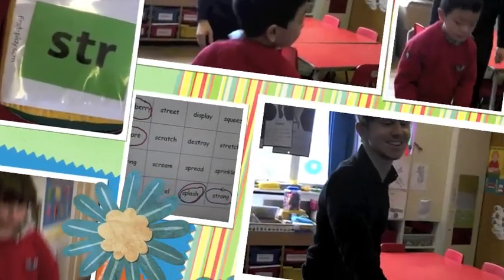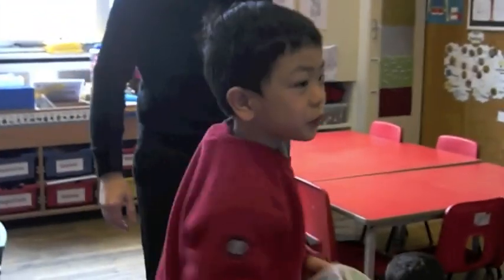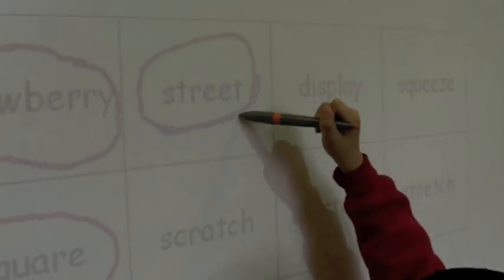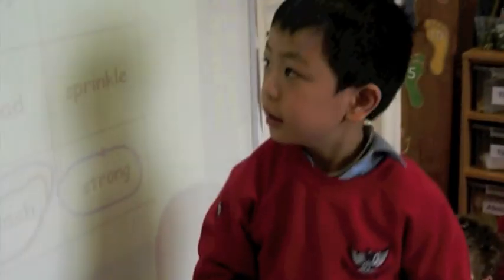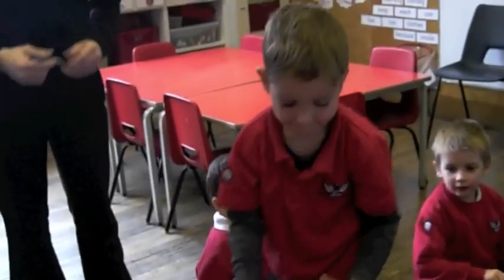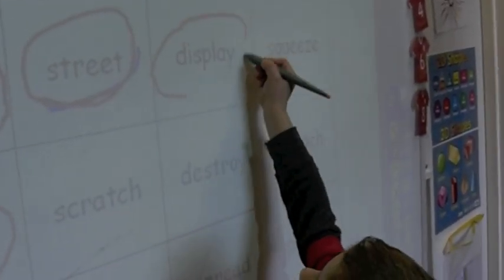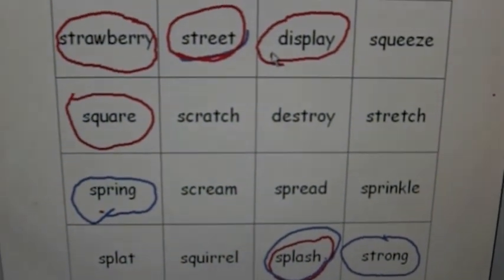There you go — get a question mark. What word is it, Wintel? Street. Street. Good boy. Superstar. Last one, hopefully, before break. 'Spl' — there is a word up there that could get you three in a row. Can you find it? Display. Go and put a ring around it. Yes! Well done. Three in a row!